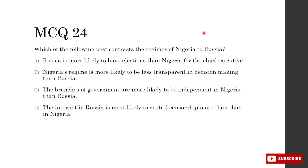Which best contrasts the regimes of Nigeria and Russia? A — Russia is more likely to have elections for the chief executive than Nigeria: both have chief executive elections, so A is nonsense. B — Nigeria's regime is more likely to be less transparent: not true since Nigeria is more democratic. C — branches of government are more likely to be independent in Nigeria than Russia: true because Nigeria is more democratic with greater separation of powers. D — Russia is more likely to curtail censorship than Nigeria: definitely not the case. So C is correct.